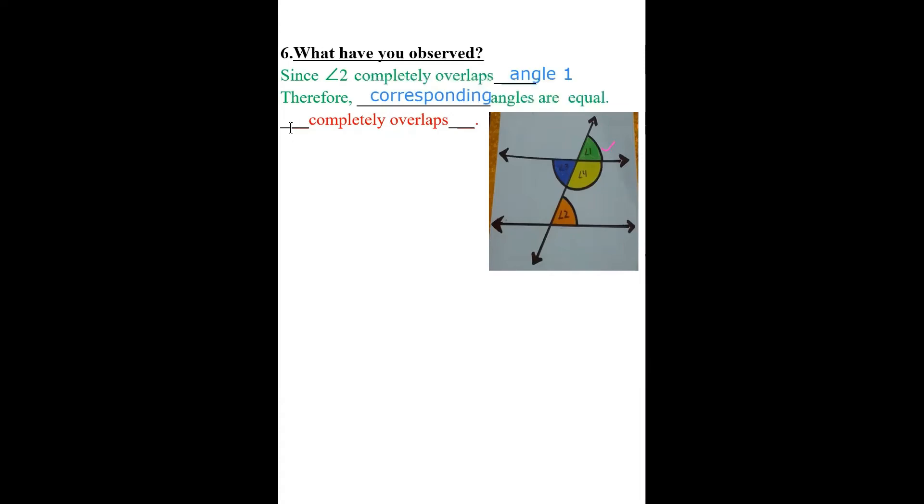Similarly, in the third figure which we took, if you observe our angle 2 and angle 3 completely overlaps. I'll just write angle 2 and angle 3. I'll just write 2 over here and 3. I'll just put the symbol of angle. This is angle 2 and this is angle 3. Angle 2 completely overlaps angle 3. They are alternate interior angles. That's why they are overlapping.